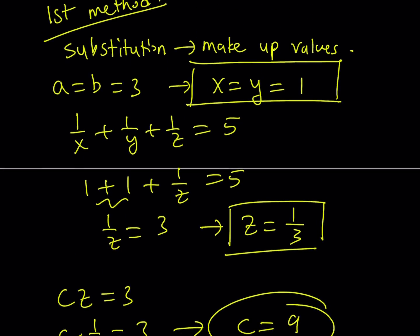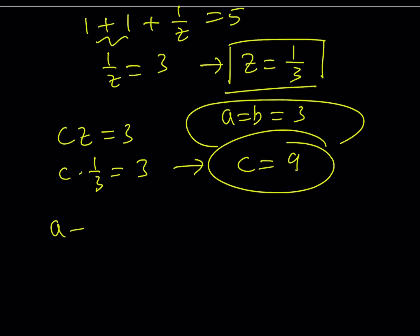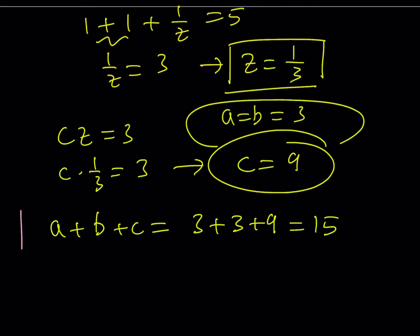Great. So, now I have A equals B equals three and C equals nine. And I'm supposed to find A plus B plus C, which is equal to three plus three plus nine. And that is equal to 15. All right, great. So, that is the end of the first method by making up values.